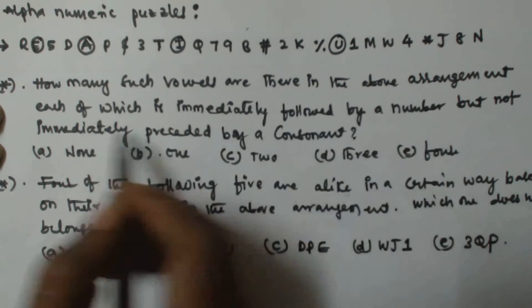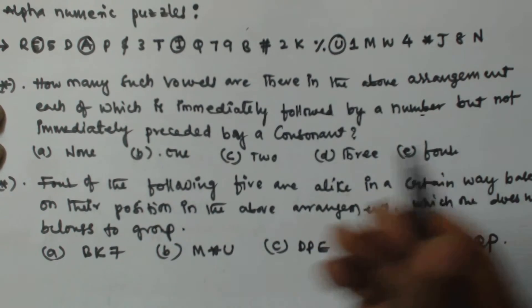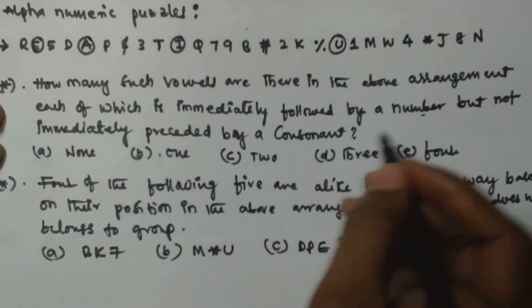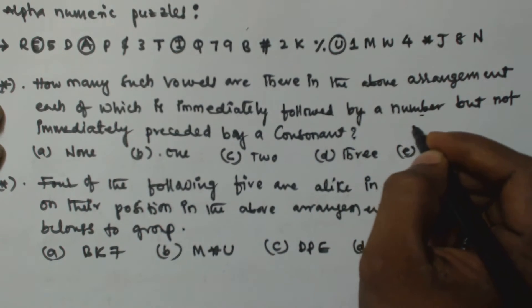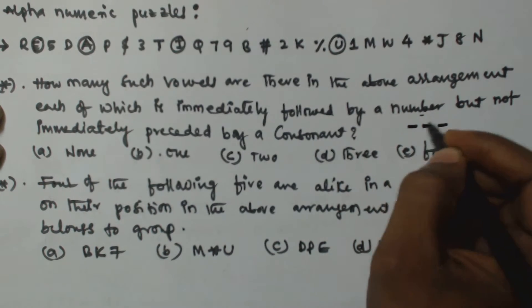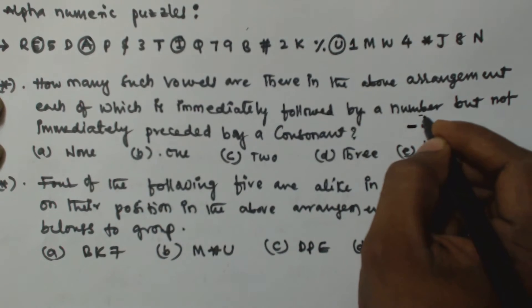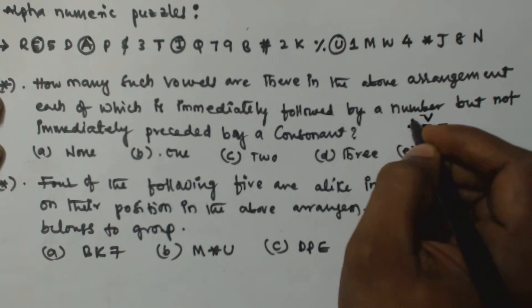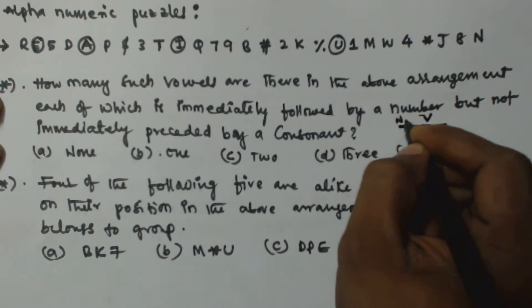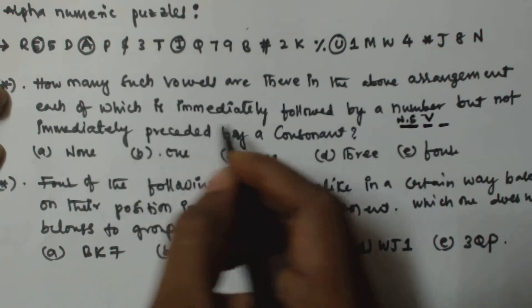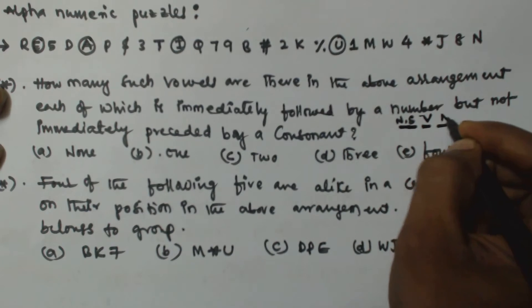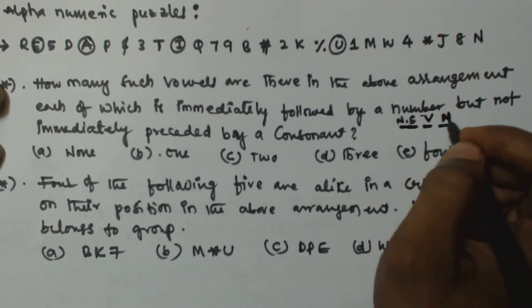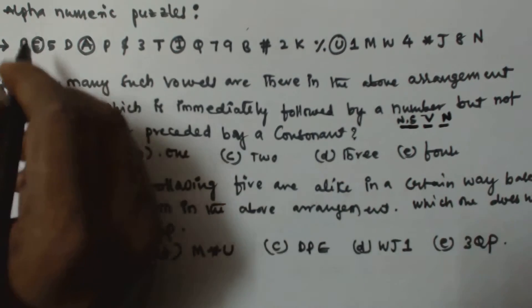The condition says: immediately followed by a number but not immediately preceded by a consonant. So the pattern we're looking for has three elements: the first position must not be a consonant (it must be a number or symbol), the middle element must be a vowel, and the last element must be a number.